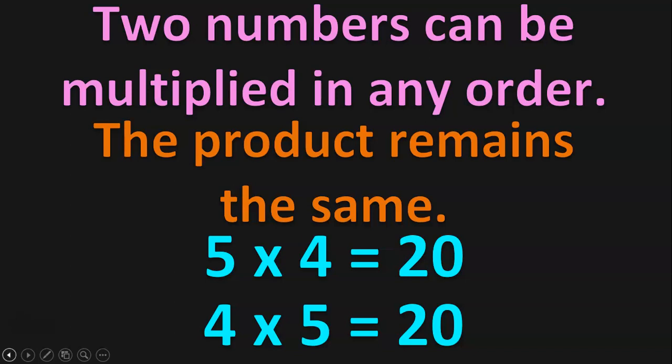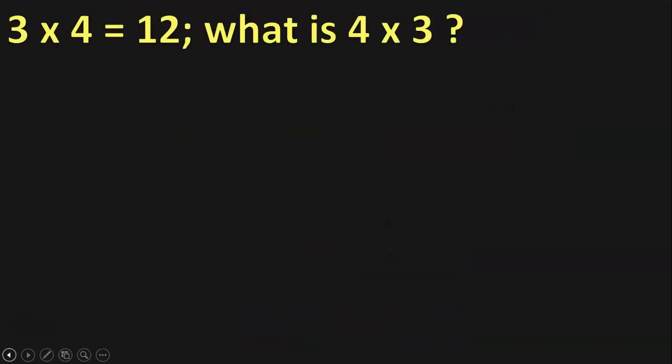Once the children are clear with this property, we can give them several activities based on this. For understanding the basics of multiplication, I have a separate video — please look into that video, the link is given below in the description box and also in the iCard section. The first activity we are going to see is: 3 into 4 is equal to 12. What is 4 into 3? To do these activities, children should be familiar with the 2, 5, and 10 tables and also 3, 4, and 6 tables.